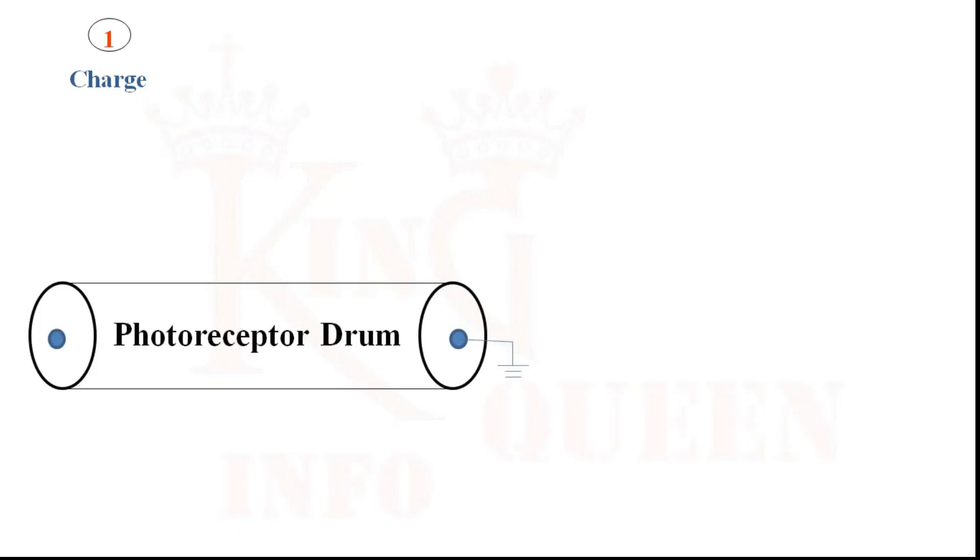The charging function uses the help of charge corotron or bias charge roller. You can see the open photoreceptor here.